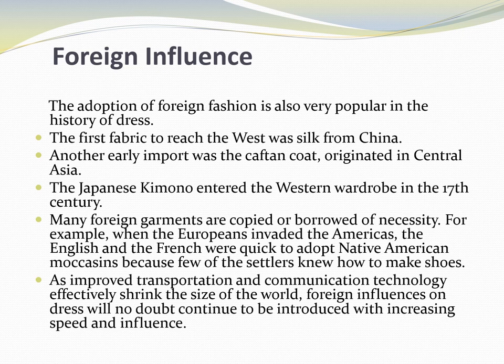Foreign influence, like rebellion and the adoption of antique fashion, is also very prominent in the history of dress. The first exotic fabric to reach the West was silk from China, which the Persians introduced to the Greeks and Romans, and which has remained popular to the present. Another import was the kaftan coat, believed to have originated in Central Asia. The Japanese kimono entered the Western wardrobe in the 17th century.